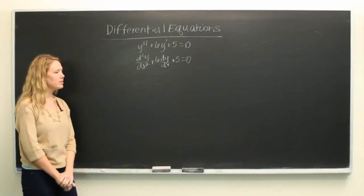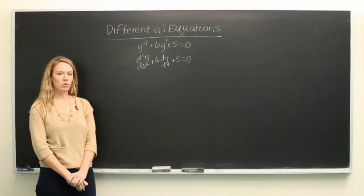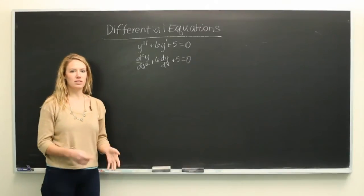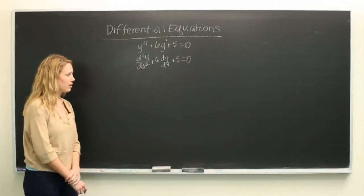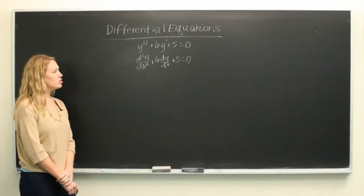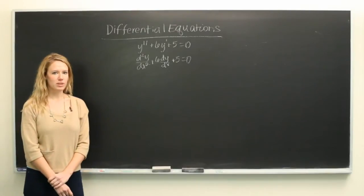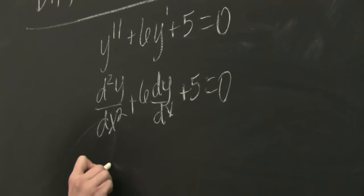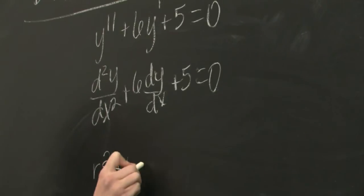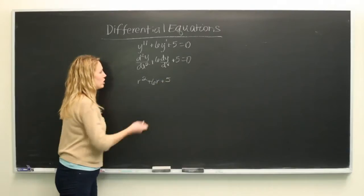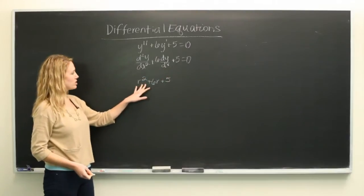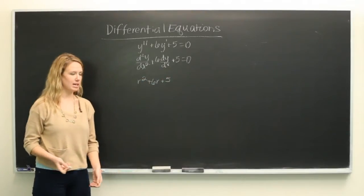Now the first step in solving our differential equation or writing it as the form y equals the sum or difference of a few terms is to figure out the roots. To do this we're going to write our equation in a different form where r takes the place of the first derivative. So if you have r squared that simply means second derivative.